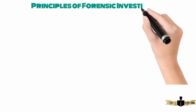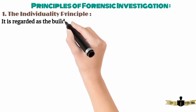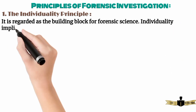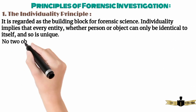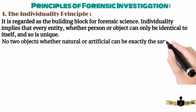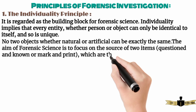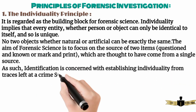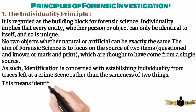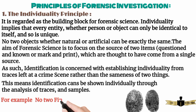Principles of Forensic Investigation — there are seven principles of forensic investigation. First, the Individuality Principle. It is regarded as the building block for forensic science. Individuality implies that every entity, whether person or object, can only be identical to itself and so is unique. No two objects, whether natural or artificial, can be exactly the same. The aim of forensic science is to focus on the source of two items — questioned and known, or mark and print — which are thought to have come from a single source. As such, identification is concerned with establishing individuality from traces left at a crime scene rather than the sameness of two things. This means identification can be shown individually through the analysis of traces and samples. For example, no two fingerprints are the same.